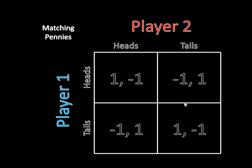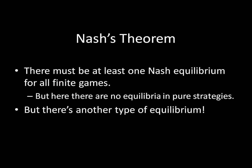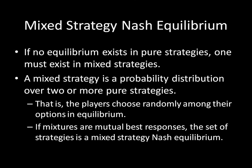So we have no pure strategy Nash Equilibria here. However, there's a different type of Nash Equilibrium that we can find in this game — it's called a Mixed Strategy Nash Equilibrium. Nash's theorem — we get the name Nash Equilibrium from John Nash, perhaps known from A Beautiful Mind — basically states that there must be at least one Nash Equilibrium for all finite games. A finite game has a finite number of players and a finite number of strategies. Here we have two players and two strategies each, so there has to be a Nash Equilibrium. Since no equilibrium exists in pure strategies, one must exist in mixed strategies.